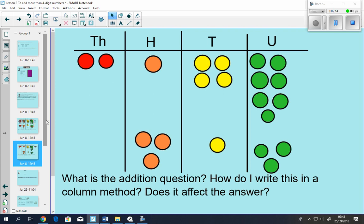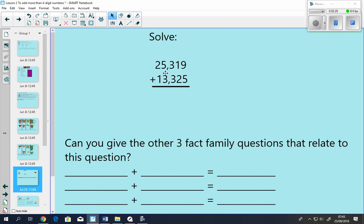Does it affect the answer, how you write it in a column method? No. As long as you are writing the numbers lined up from units backwards, or units for each other. So you have your units on the right-hand side, and moving along the left in each column.